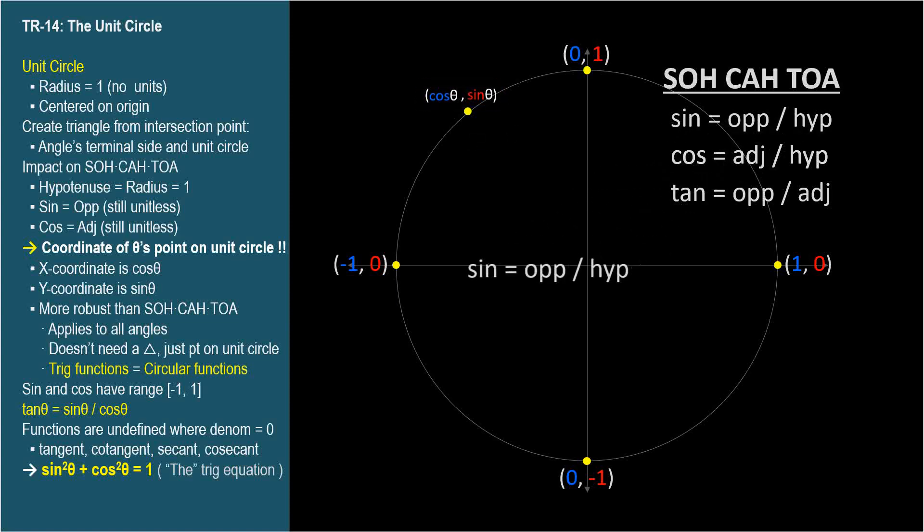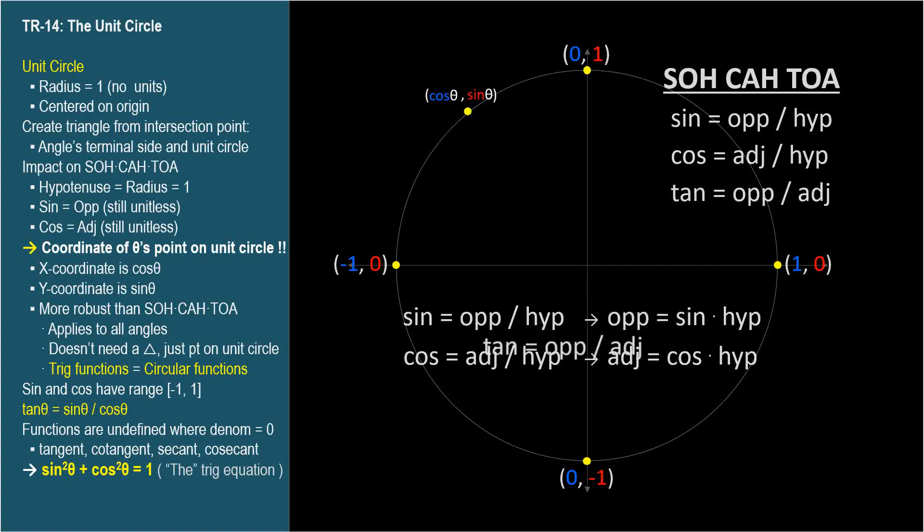Tangent equals opposite over adjacent. Let's rewrite the sine ratio to isolate opposite. Opposite equals sine times hypotenuse. Similarly, adjacent equals cosine times hypotenuse. Since tangent equals opposite over adjacent, and we have terms right here for opposite and adjacent,